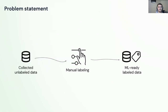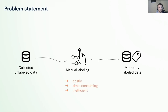The problem statement is clear: you have unlabeled data and you want it to be machine-learning-ready labeled. The problem is this daunting thing in the middle — manual labeling — which is really costly, time-consuming, and inefficient, because more often than not you're labeling duplicates. Ideally you'd get rid of it completely, but that's not really possible. We can leverage modern techniques that go way beyond this.